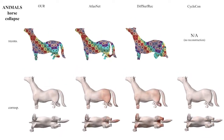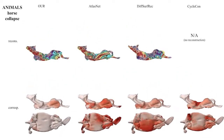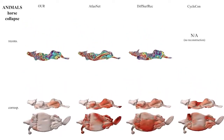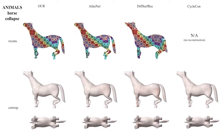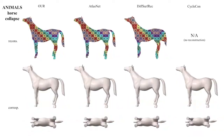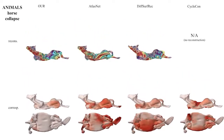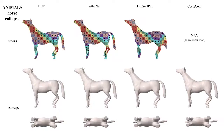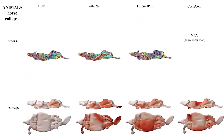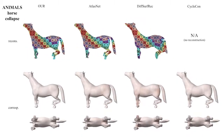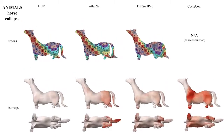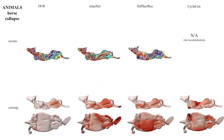We finish with a severe stress test of the methods: a deflating rubber horse. The multiple foldovers of the ground truth surface are very challenging. Nonetheless, our reconstruction correctly reconstructs the deflating surface, in contrast to the artifact-laden reconstructions of AtlasNet and DSR.